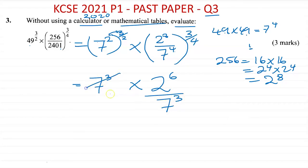If I divide seven to the power of three by seven to the power of three, I get one. And then one times two to the power of six. Two to the power of six is 64. So the answer to this one is 64.